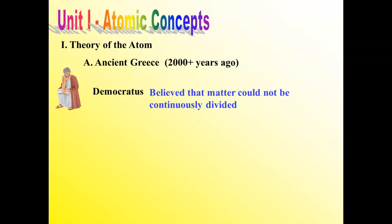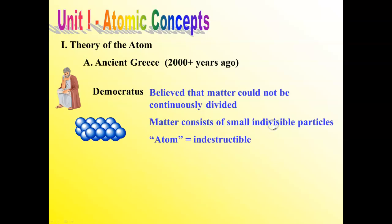Democritus and his fellow philosophers believed that there was a limit. There was a point at which you could no longer divide an atom. He believed that matter consisted of small, indivisible particles. As a matter of fact, the word atom comes from the Greek word atomos, which means indestructible. Once you got down to an atom, that's it. There's nothing smaller than that. They also believed that these particles were moving around.